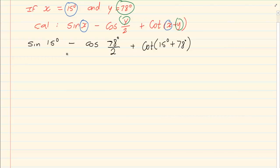So first we do sin 15. You simply press it in your calculator sin 15, close brackets, equals to. Then you say minus cos, you can use your fraction button, 78 over 2, close brackets, equals to 0.777.